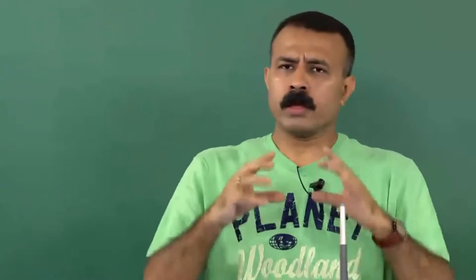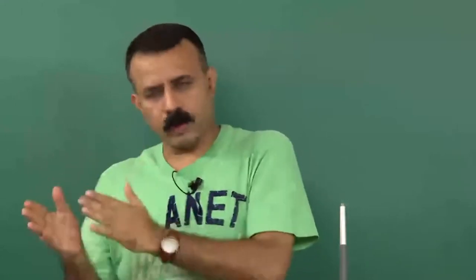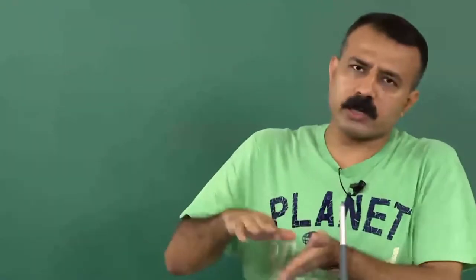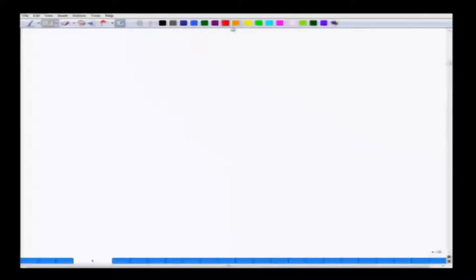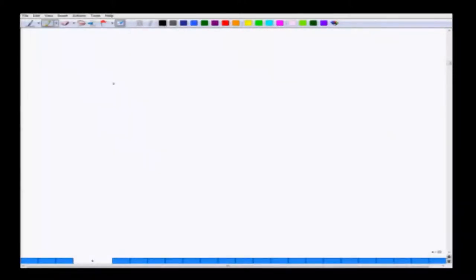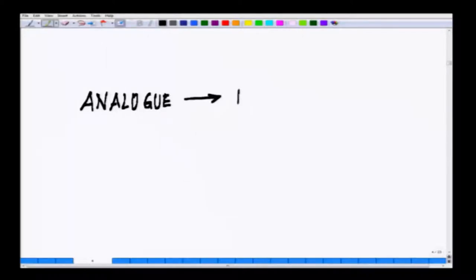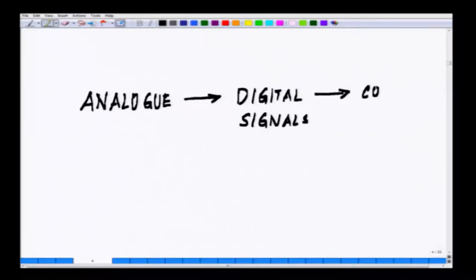These analog currents are sent to an ADC — analog to digital converter. From the analog to digital converter, the digitized signal is then sent to the computer for analysis. You can really see it on the computer screen.